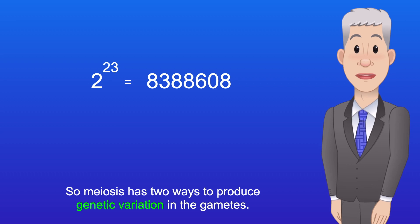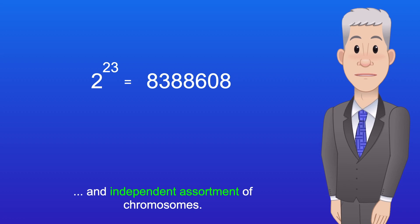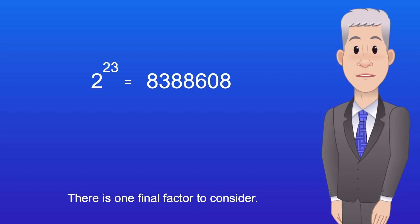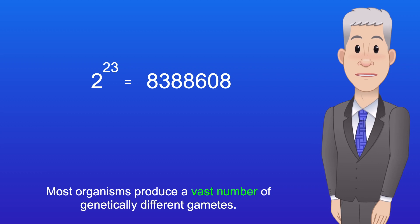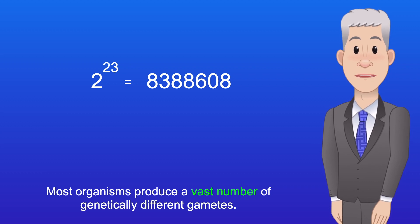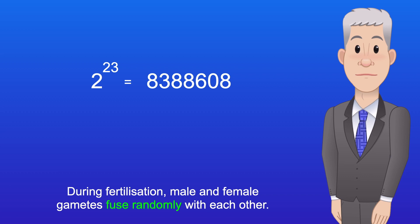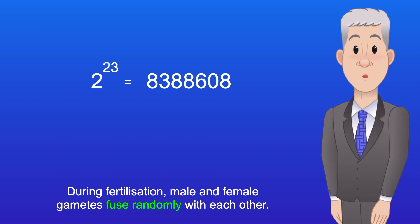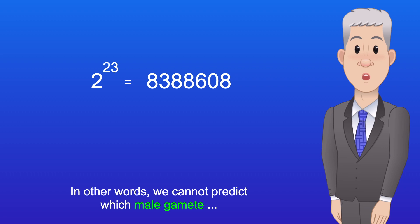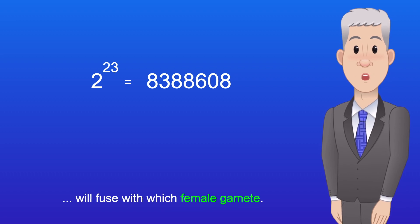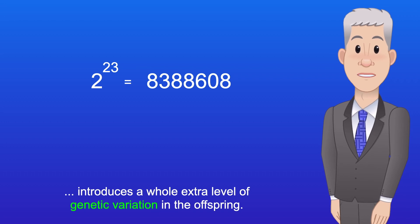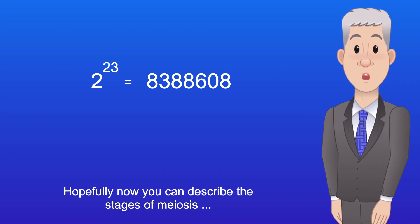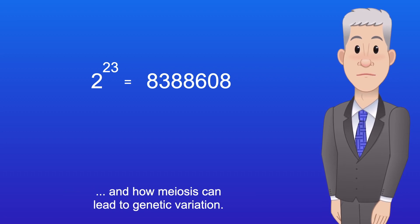So meiosis has two ways to produce genetic variation in the gametes: crossing over and independent assortment of chromosomes. There is one final factor to consider. Most organisms produce a vast number of genetically different gametes, and during fertilization, male and female gametes fuse randomly with each other. We cannot predict which male gamete will fuse with which female gamete, and this random fusion of gametes introduces a whole extra level of genetic variation in the offspring. So hopefully now you can describe the stages of meiosis and how meiosis can lead to genetic variation.